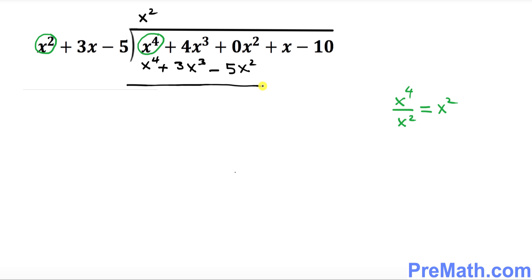The next thing we want to do is change the sign — switch the sign. This positive becomes negative, this positive becomes negative, this negative becomes positive. That's the very first step. As you can see, these two terms are gone.